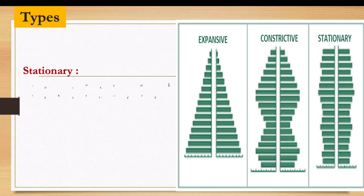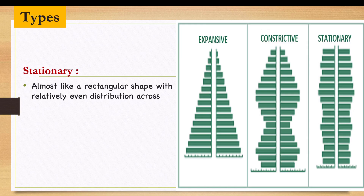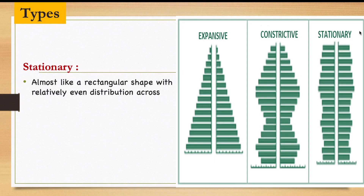Now let's see the stationary type. Interestingly, this one is supposed to take the shape of a pyramid, but instead it looks rectangular — a typical almost rectangular shape with a relatively even distribution. The bars are somehow even across all age groups.